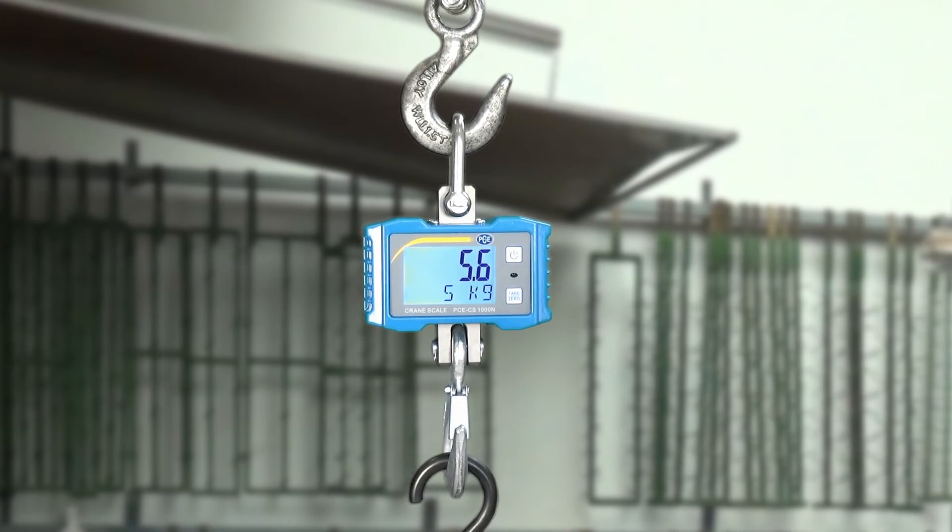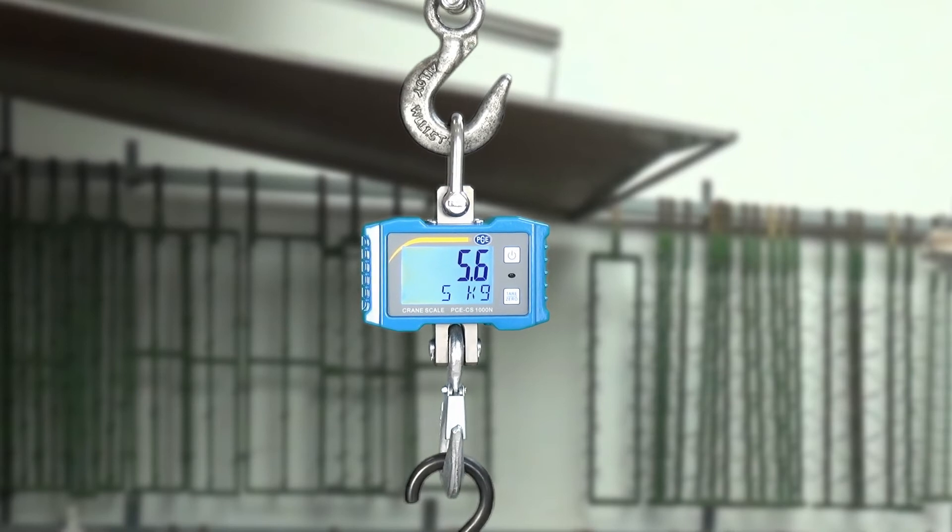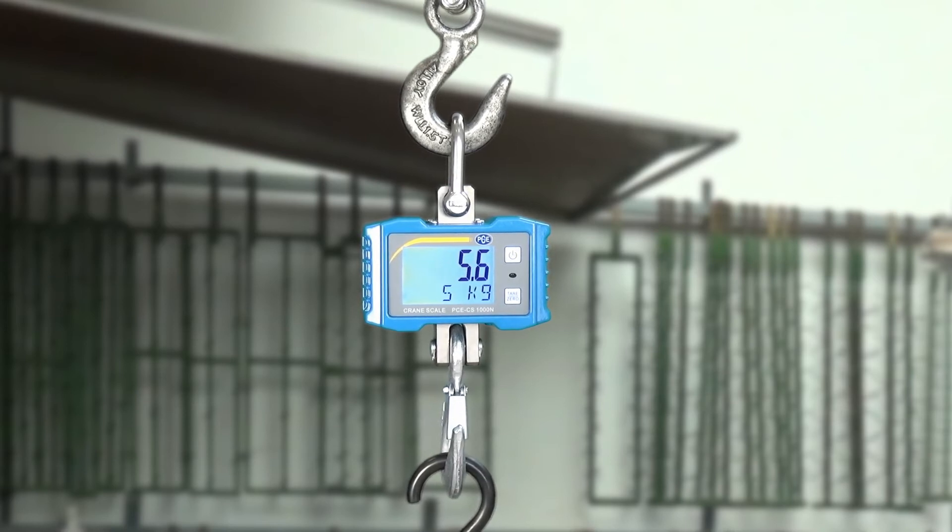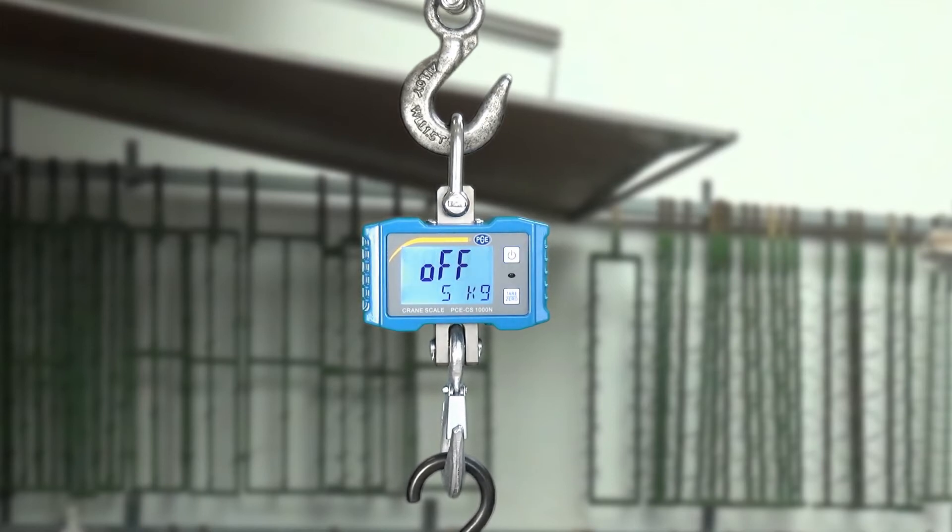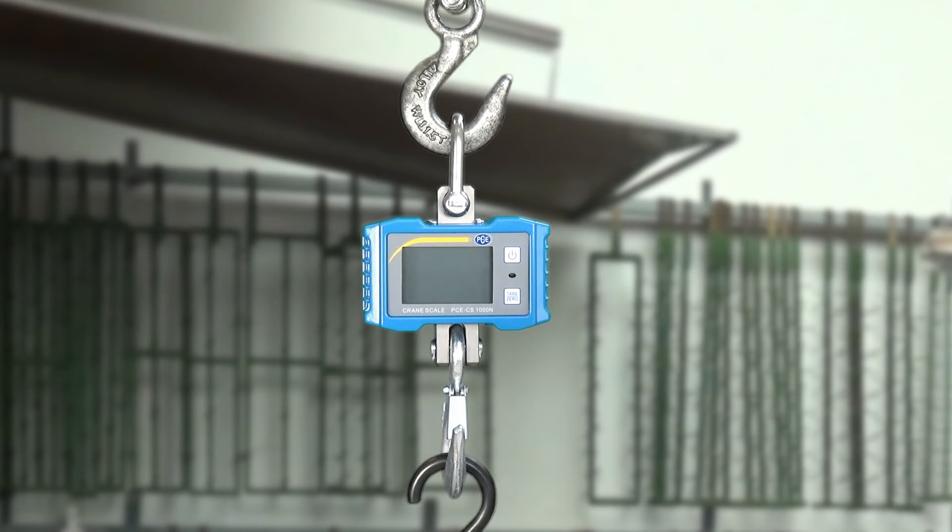Now to shortly demonstrate this automatic zeroing. We leave the 5.6 kilogram hanging on the crane, turn the scale off by pressing the on-off button, and turn it back on. After the so-called self-test phase, you can see the Z in the display. And the value we saw before on the crane scale is simply ignored from the crane scale, i.e. zeroed.